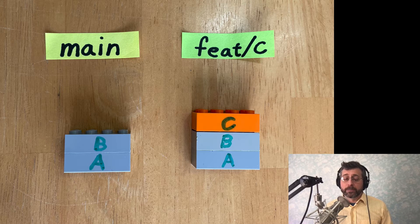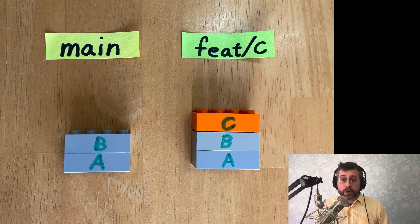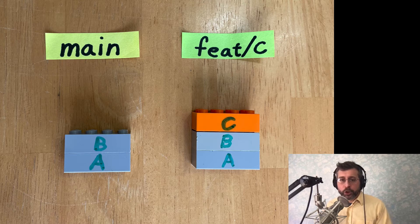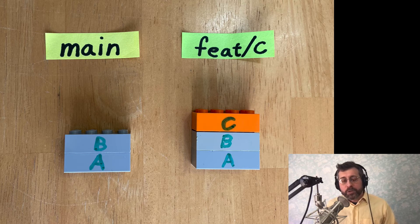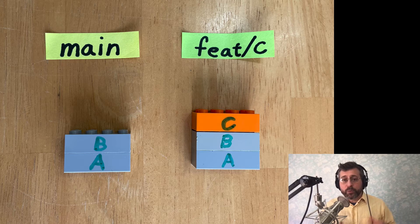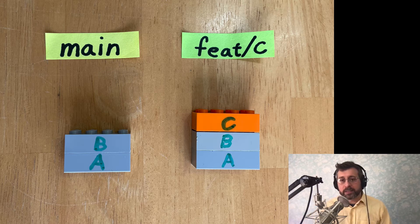For example, here, we have our main branch with two commits on it. Commit A, commit B. And then we create this feature branch, feature/c. So feat is just short for feature. So we've got the feature branch and it's got those same commits, A and B, because we branched off of main and then we added one new commit, C.